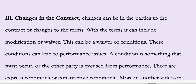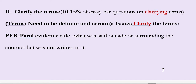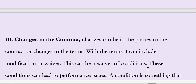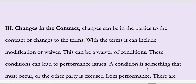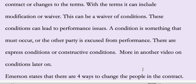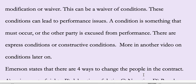Besides clarifying the terms, there's also going to be changes to the contract. He said there are four ways that you can change the contract. The parties can be changed, or the terms can be changed. With the terms, it can involve a modification or a waiver, and this can be a waiver of the conditions. A condition is something that must occur, or the other party is excused from performance if it doesn't occur. There are express conditions, constructive conditions — more on this in another video.